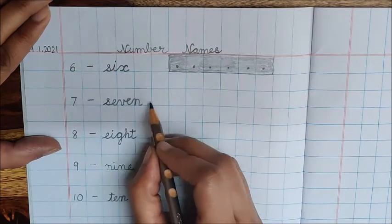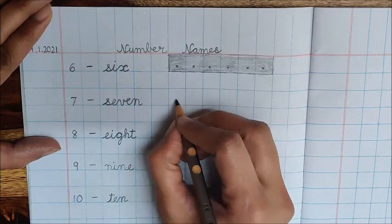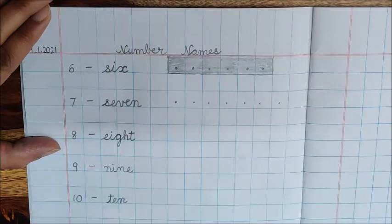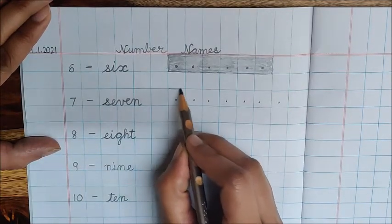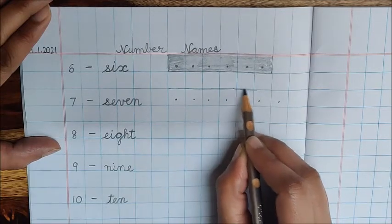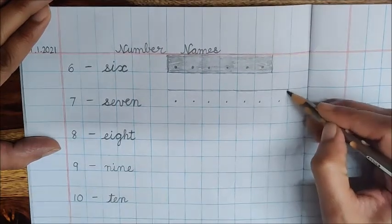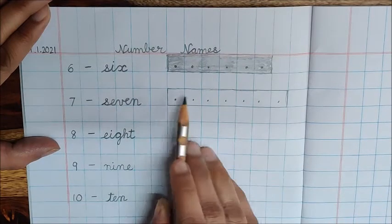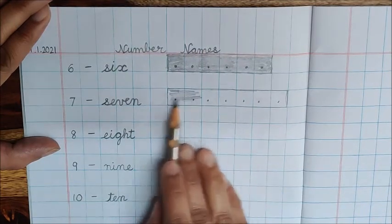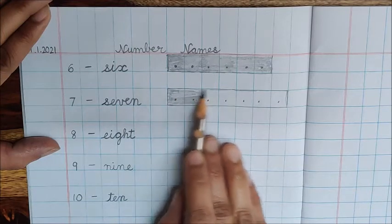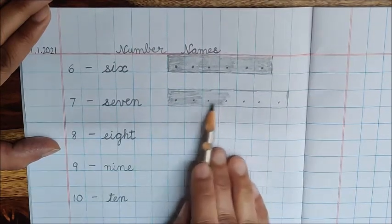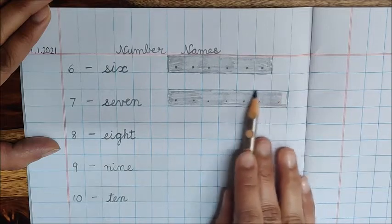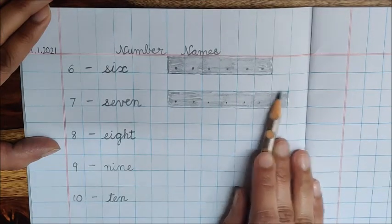Now what is this number? 7. So again leave 2 boxes, 1 and 2, and make 7 dots: 1, 2, 3, 4, 5, 6, 7. Now shade in these boxes. First make the boundary. Now shade these boxes. Do light shading so that your dots are visible. It's done.